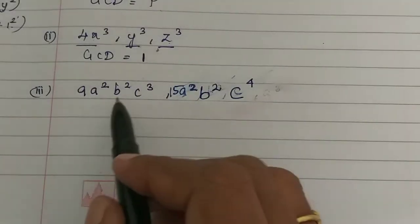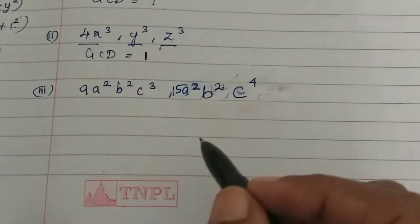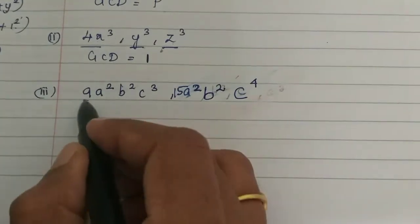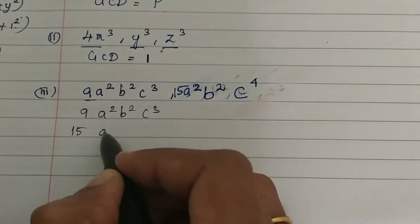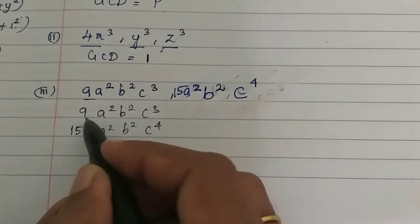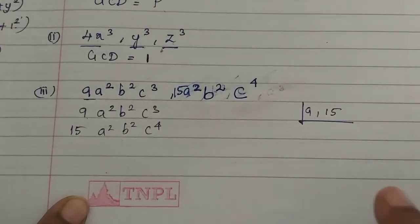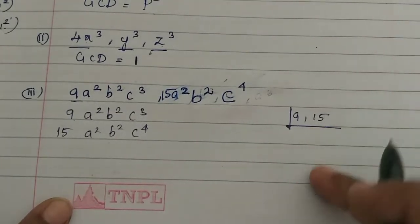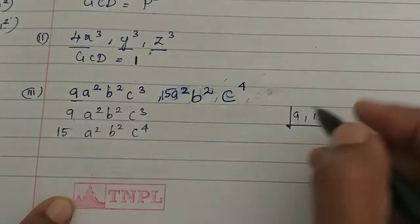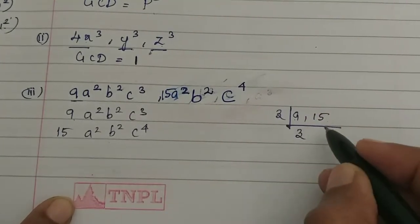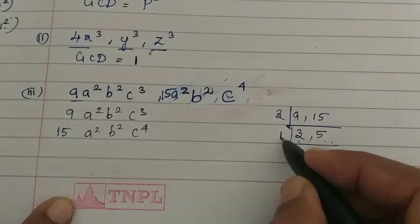The next subdivision is 9a²b²c³ and 15a²b²c⁴. If you look at the coefficients, for 9 and 15, we use the factor table. 3 times 3 is 9, and 3 times 5 is 15. So 3 is the common divisor of 9 and 15.